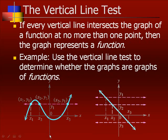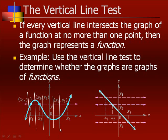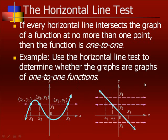The vertical line test says if every vertical line intersects the graph of a function at no more than one point, then the graph represents a function. Use the vertical line test to determine whether graphs represent functions. For the first graph, no vertical line will ever touch the graph in more than one spot, so that one is a function. Same thing for the second graph — every vertical line will touch the graph in no more than one point.